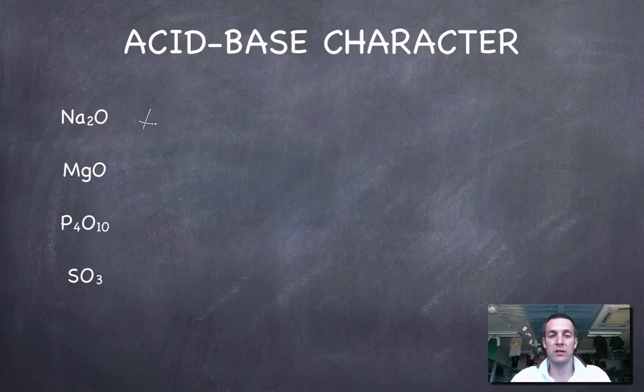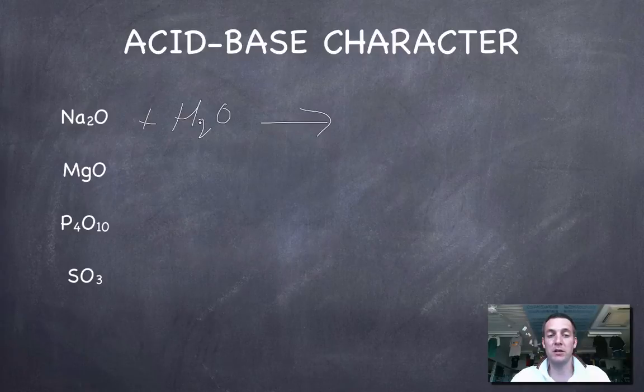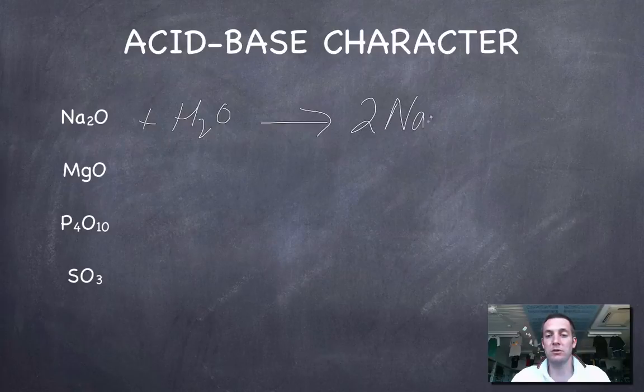Now sodium oxide reacts with water. The oxide ion basically takes an H+ ion away from the water, leaving you with OH-, and we've now got two OH- ions and two sodium ions, so we're going to have two sodium hydroxides.